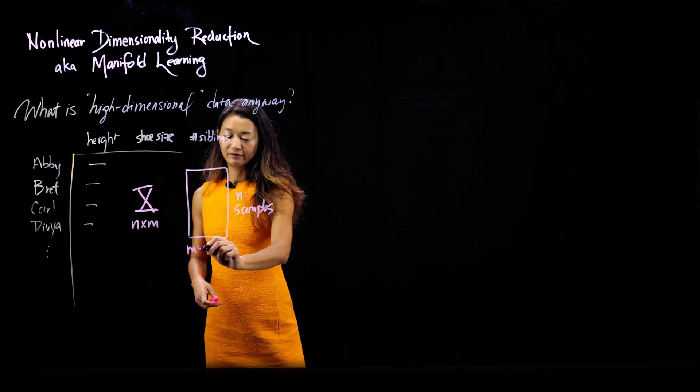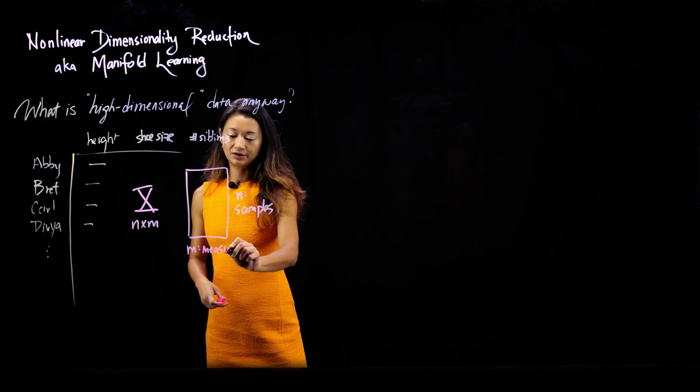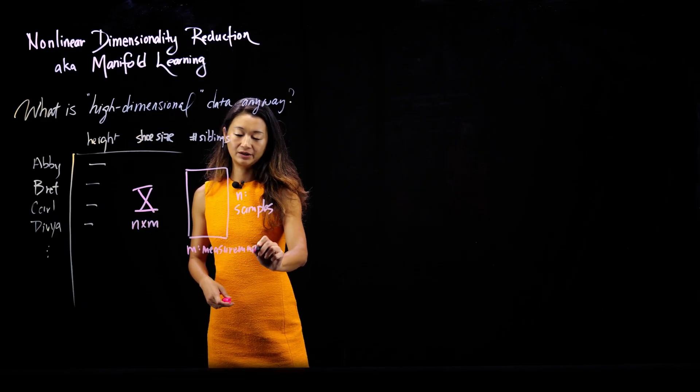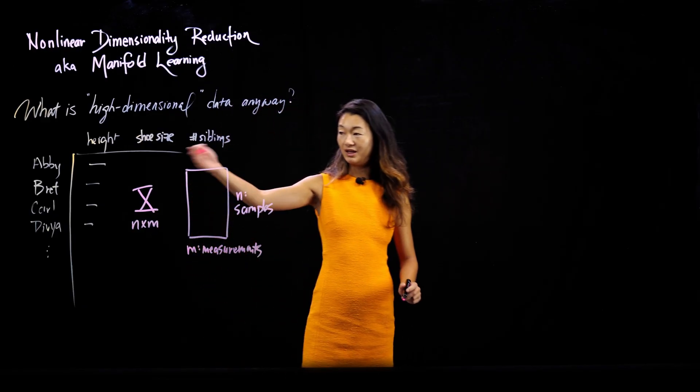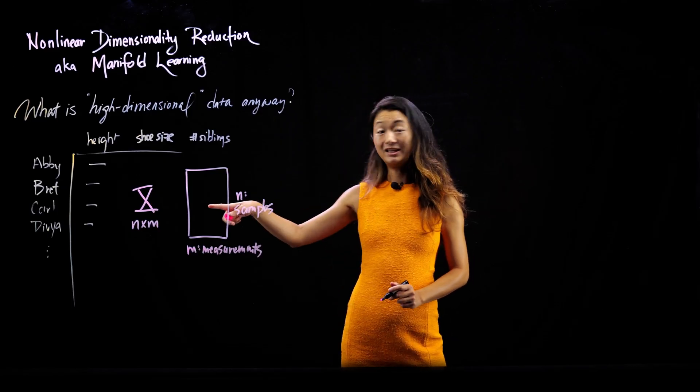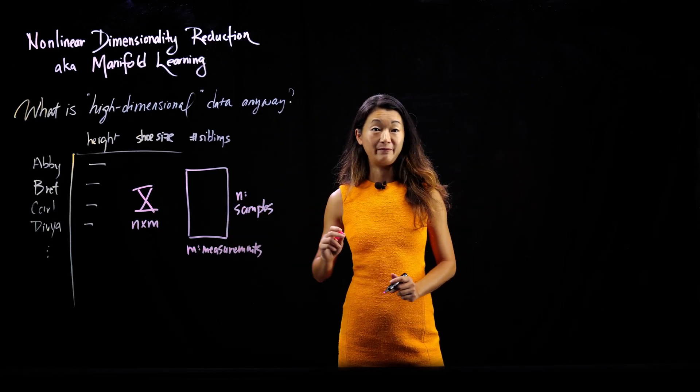So that's just however many things that you felt like measuring about these people. So here, I've named three of them. So my data matrix will end up being n, number of people, by three, which is the number of measurements.